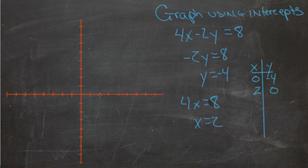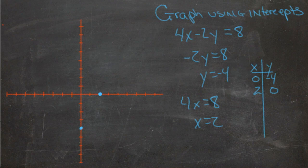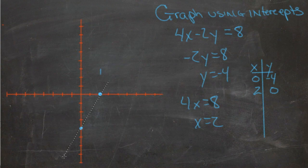So now we have x is 2, y is 0. And y is negative 4, x is 0. And we end up with a line something like that. All right.